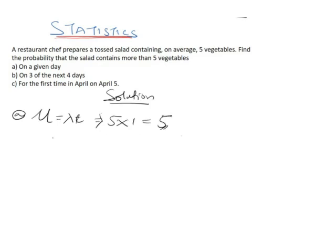We are told to find the probability that the salad contains more than five vegetables. That's probability of X greater than 5, which is the same thing to say 1 minus the probability of X less than or equal to 5.